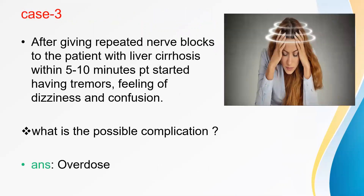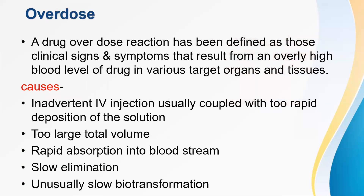Case 3. After giving repeated nerve blocks to a patient with liver cirrhosis, within 5-10 minutes, the patient started having tremors and feelings of confusion and dizziness. The possible complication is overdose. A drug overdose reaction is defined as clinical signs and symptoms resulting from an overly high blood level of drugs in various target organs and tissues. Causes include inadvertent IV injection coupled with too-rapid deposition, too large a total volume, rapid absorption into the bloodstream, slow elimination of drug, and unusually slow biotransformation.